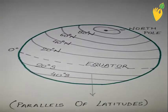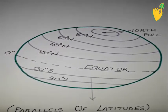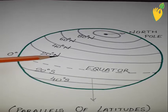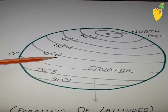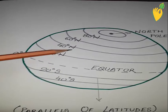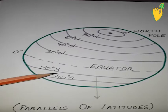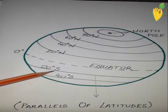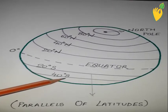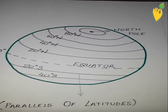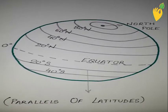The parallels of latitude in the northern hemisphere are shown as degree N, or degree north latitude, signified by the letter N. In the southern hemisphere they are shown as degree S latitude, signified by the letter S. This was the overall diagram of parallels of latitude.